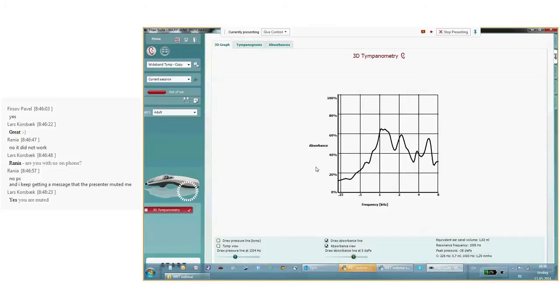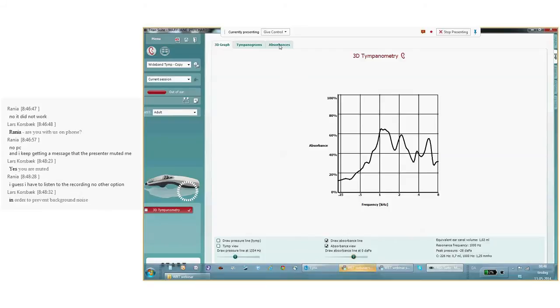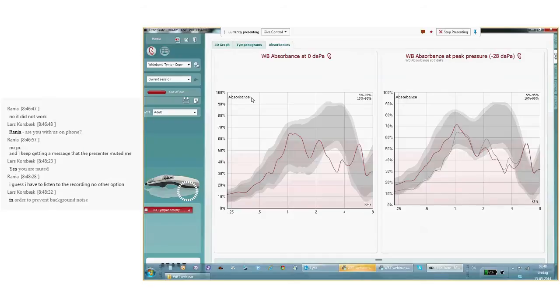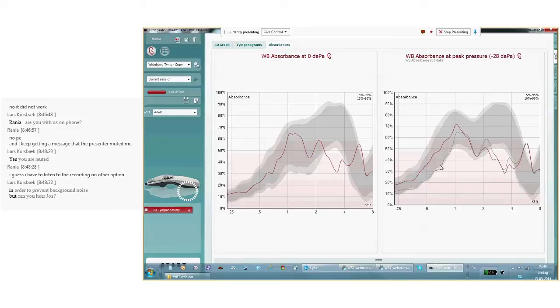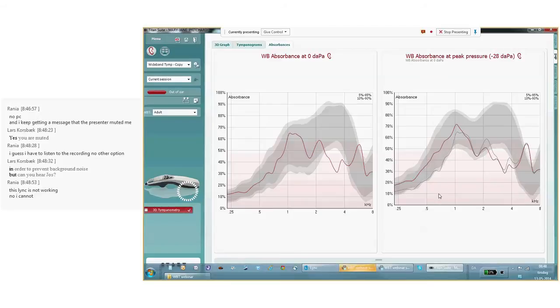Though from this graph you cannot make an interpretation, or it's very difficult to give any meaning to what it is. So we go to the absorbance graphs. In my example, I show two graphs. The left graph shows the absorbance at ambient pressure, and the right graph shows it at peak pressure. The right graph also demonstrates a gray line, which is also the absorbance at ambient pressure. You could do with a single graph, but I thought, just for the explanation, maybe it's nice to see them next to each other as well.